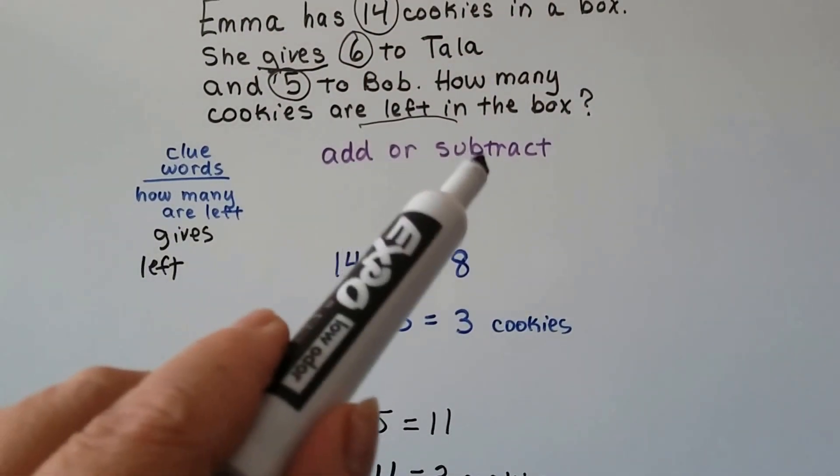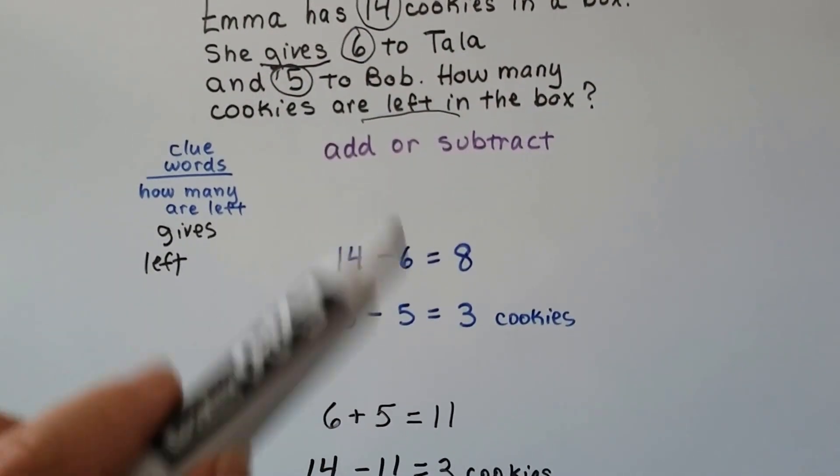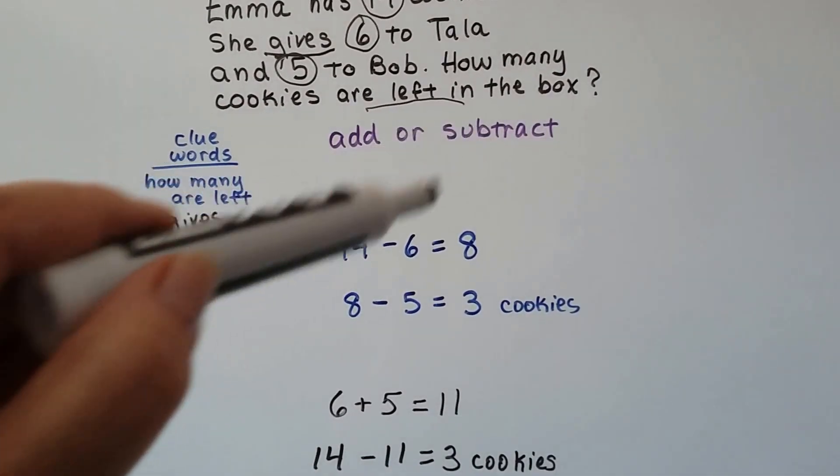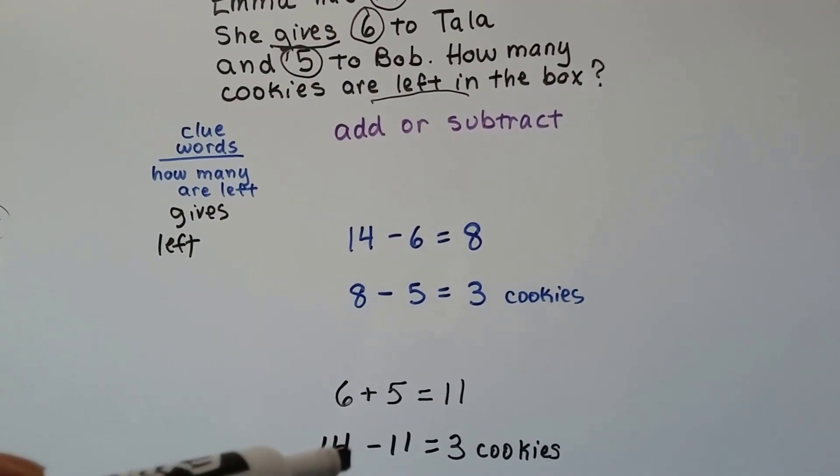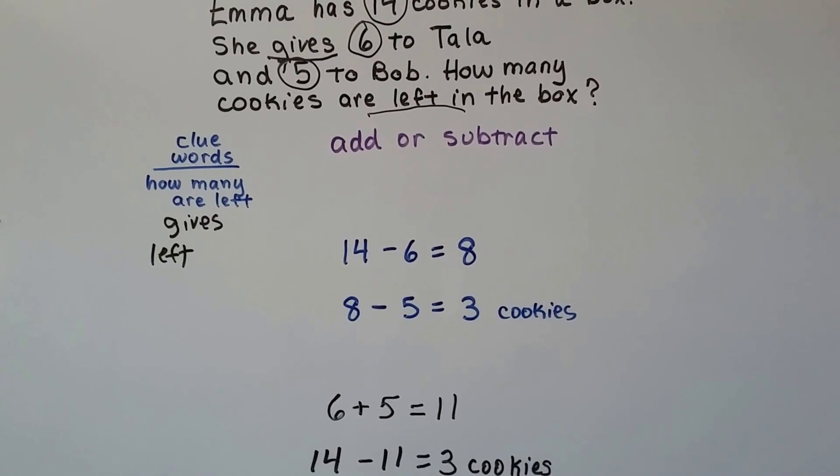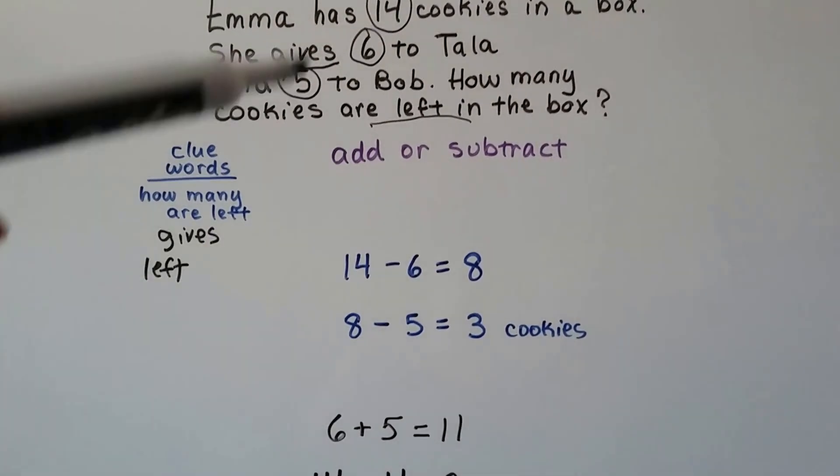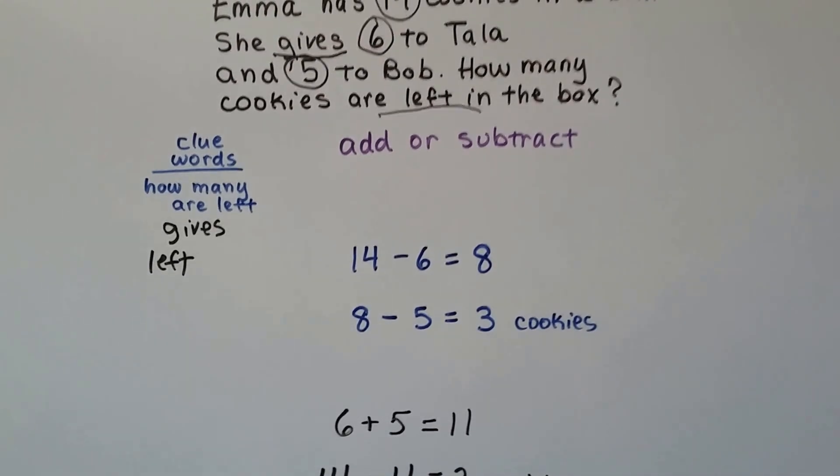So we could have added or subtracted. It would have been both. It would have been two subtraction or it would have been an addition and a subtraction. Either way, we needed to find out how many were left in the box.